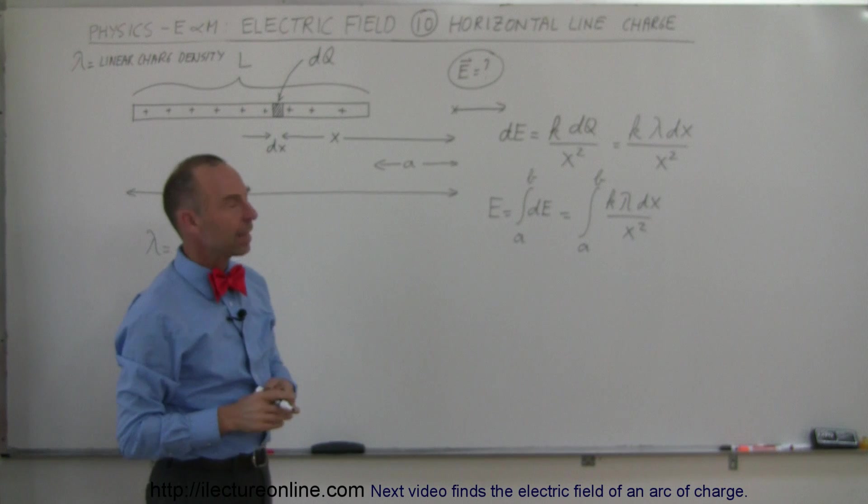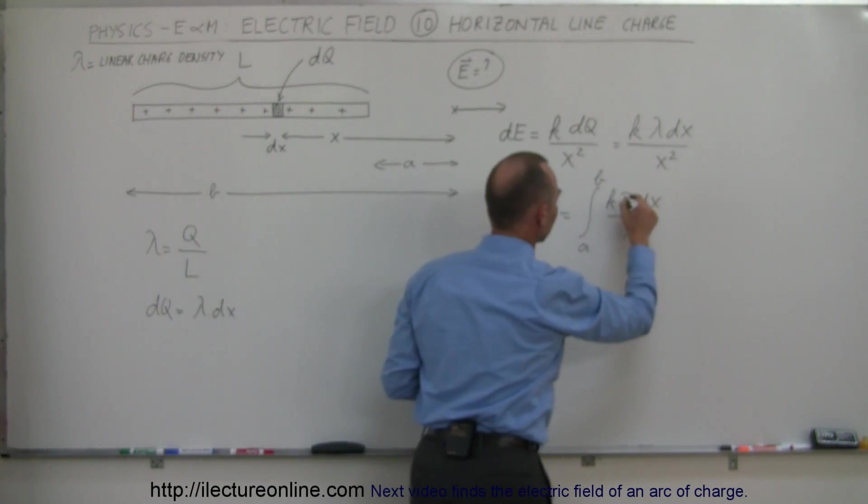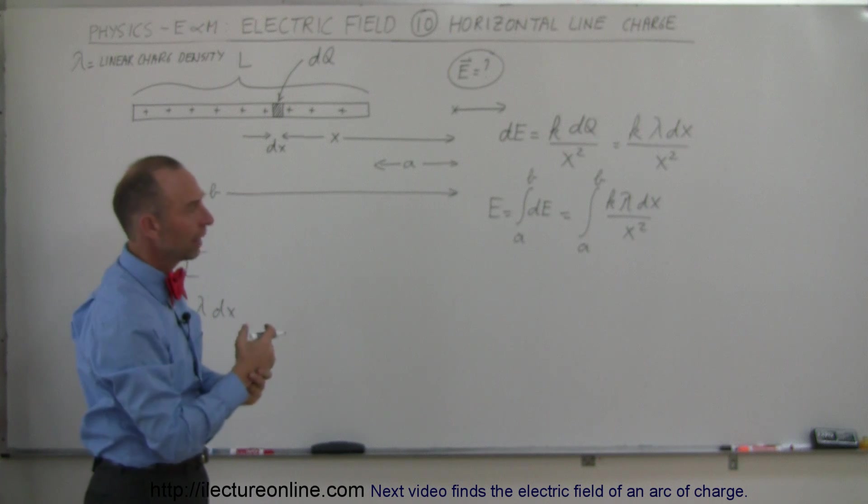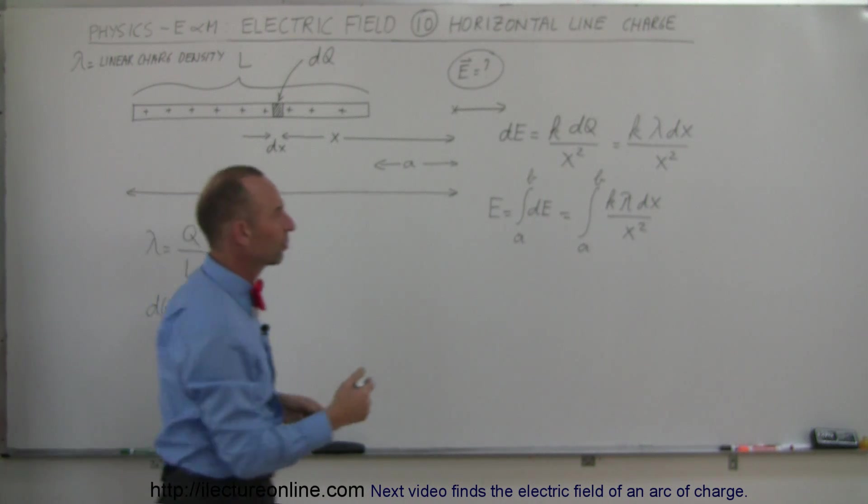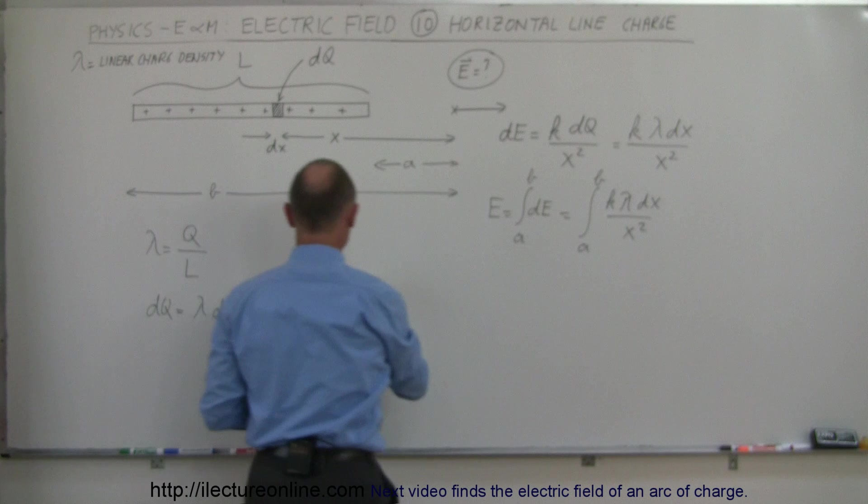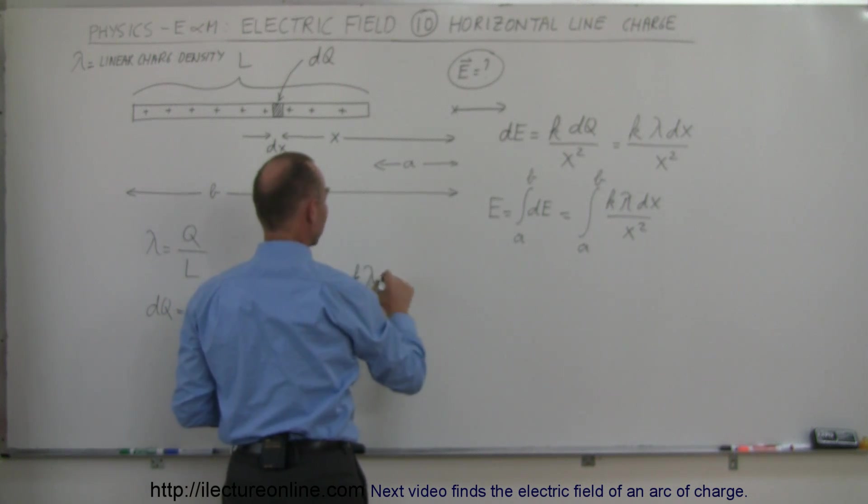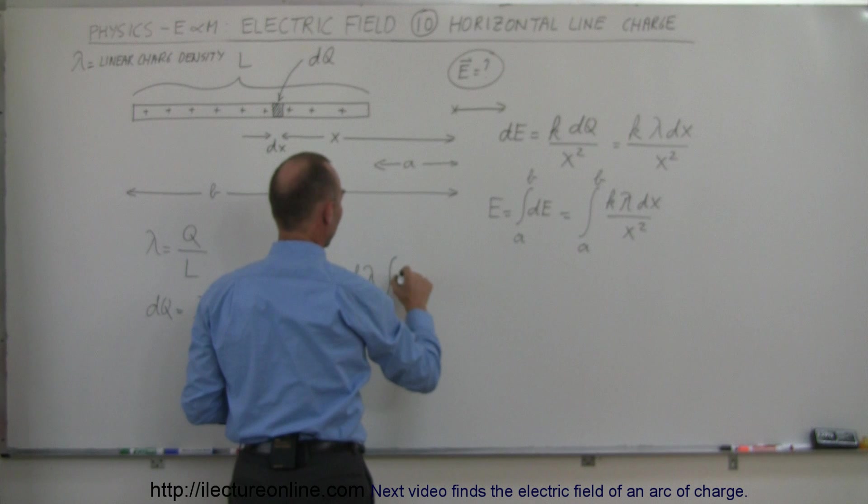Now K and lambda, they are constants, they can come out, and we can write this as DX times X to the minus 2 power. So the electric field here is equal to K times lambda times the integral of X to the minus 2 DX from A to B.